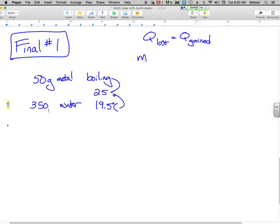So the Q lost is going to be the MC delta T lost is going to equal the MC delta T gained. And again what's going to happen is the one that's losing here everything over here is going to be the metal and everything over here is going to be the water.